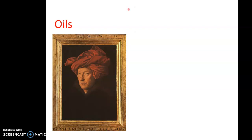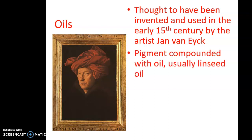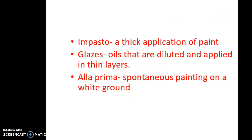Oil paint is thought to have been invented and used in the early 15th century by the artist Jan van Eyck. This is a self-portrait of Jan van Eyck — on the left he looks a little bit like Professor Quirrell from Harry Potter. Jan van Eyck painted the Arnolfini Wedding. Oil paint takes pigment compounded with oil, usually linseed oil, and dries slowly. It can be applied in different ways: impasto is a thick application of paint — if you've walked up to a painting with chunks of paint, that's called impasto.